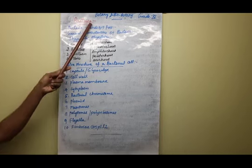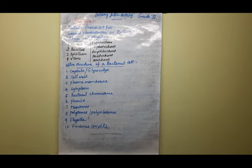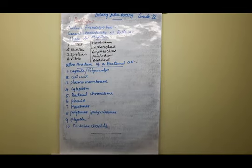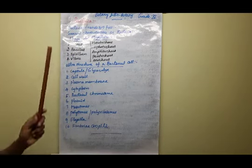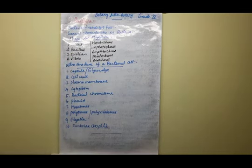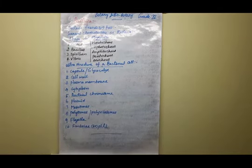Bacteria were discovered by Antonie van Leeuwenhoek, a Dutch scientist. In the year 1676, he discovered bacteria through a compound microscope. Initially, bacteria were called animalcules. Only after that were they given the name bacteria.